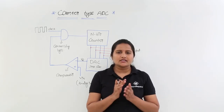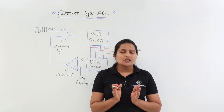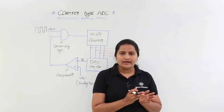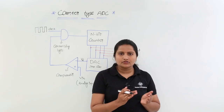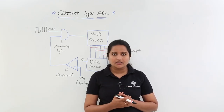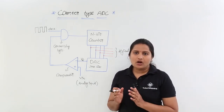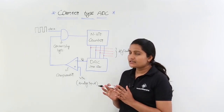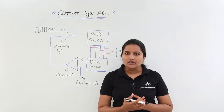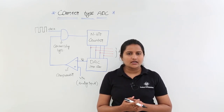In this class we are going to discuss about analog to digital converters. We already have some idea of how many analog to digital converters there are, as given in the introduction class on data converters. In this class we are going to discuss about counter type ADC, which is a fast classification under analog to digital converters.